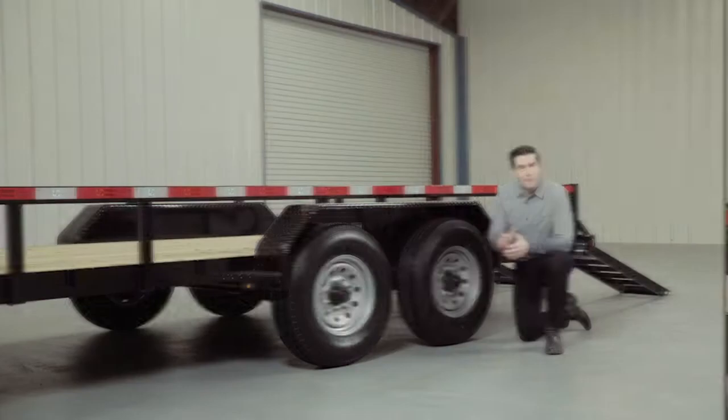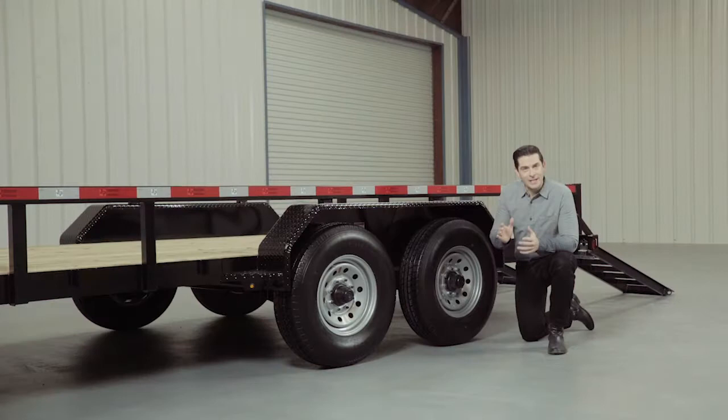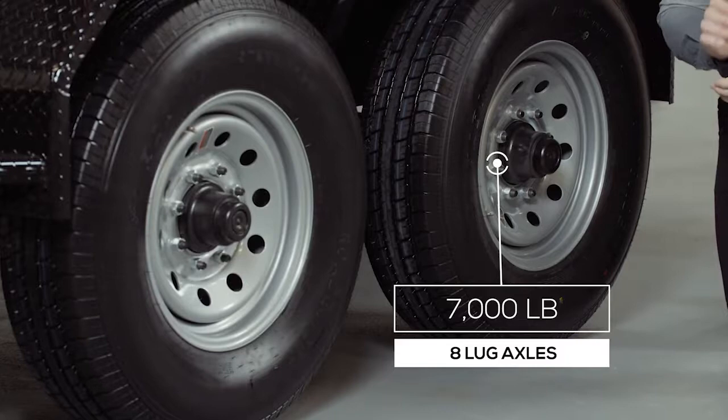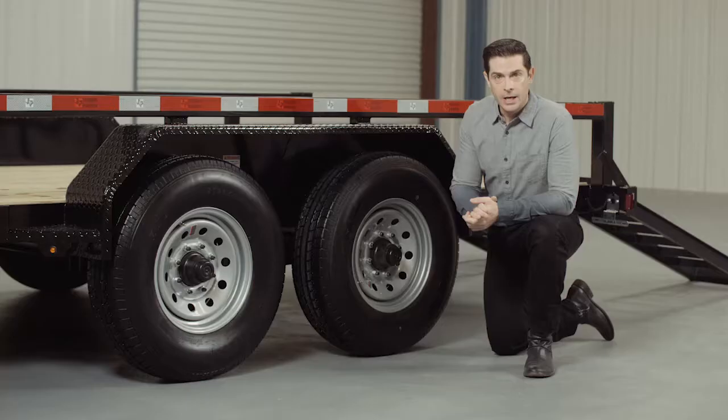For running gear this trailer comes standard with 2 heavy duty 7,000 pound 8 lug axles with brakes on all 4 wheels. If you get into a slippery situation you want all the braking power you can get.